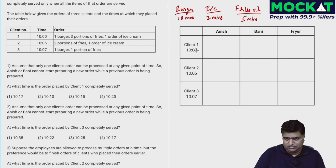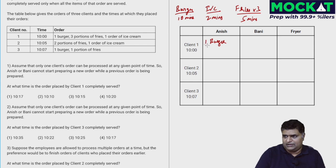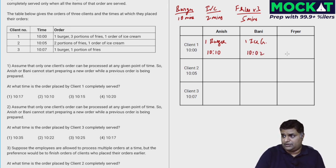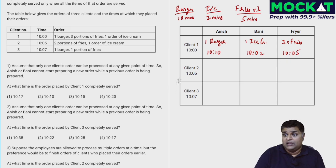The first order comes in at 10:00. A burger and ice cream need to be prepared. Let's put Anish on the burger — that takes 10 minutes, completing at 10:10. Bani handles the ice cream, done in 2 minutes at 10:02. The fryer handles three portions of fries, taking 5 minutes, completing at 10:05. The order is complete when the last item is done, so at 10:10.